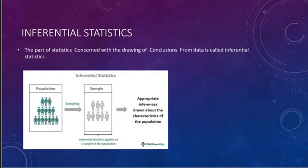The next branch is inferential statistics. The part of statistics concerned with the drawing of conclusions from data is called inferential statistics. In inferential statistics, there is a population. Population is a huge number — for example, in a state like Telangana or any state, all the persons living in that state come under the population.